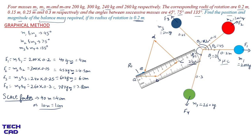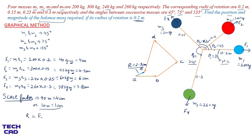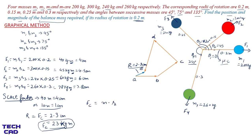To find the resultant, join the initial point A to the last point E. Measure this AE line with the scale — it is approximately 2.3 cm, which represents 23 kg·m. This is the resultant and equals the centrifugal force of the balancing mass FC = 23 kg·m. The balancing mass is M = FC / r = 23 / 0.2 = 115 kg.